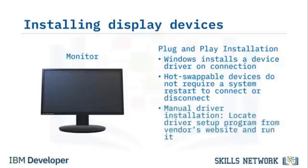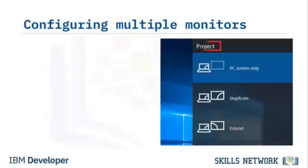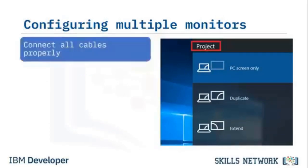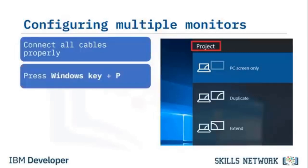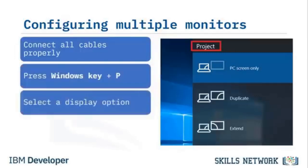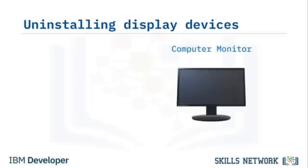Hot-swappable devices such as monitors do not require a system restart to connect or disconnect. If you need to manually install a driver, locate the setup program from the vendor's website and download and run it. To enable multiple monitors in Windows 10, ensure cables are connected, press Windows key plus P, and select a display option such as Duplicate or Extend.